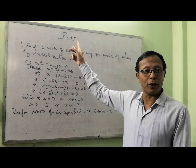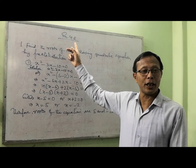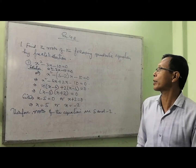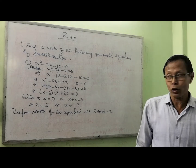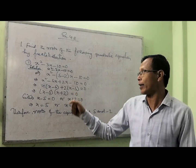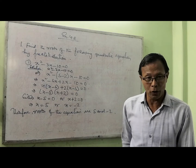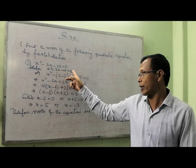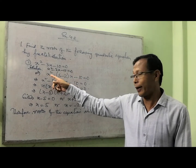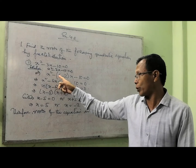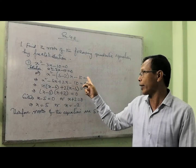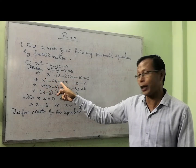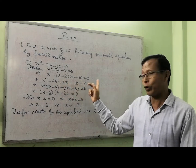From the same chapter quadratic equation, I want to start exercise 4.2, question number 1. Find the roots of the quadratic equation by the method of factorization. The equation is x squared minus 3x minus 10 equal to 0. We can write this as x squared minus (5 minus 2)x minus 10, which becomes x squared minus 5x plus 2x minus 10 equal to 0.